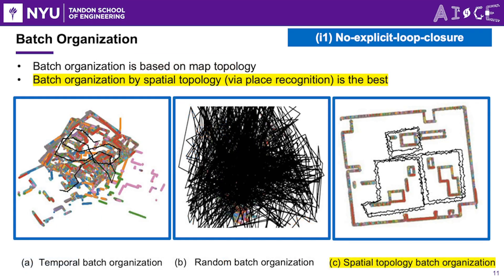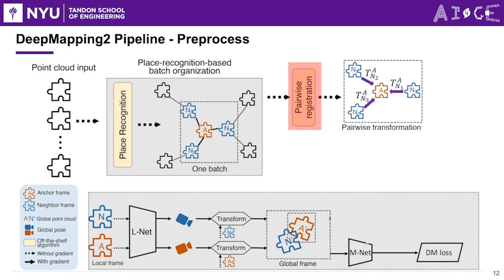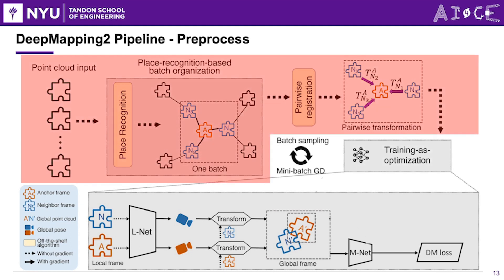Furthermore, the study compares different batch organization techniques, such as temporal organization and random organization. The findings demonstrate that batch organization based on spatial topology yields superior results compared to other methods. For each batch, the transformation between each frame and its neighboring frame is computed using the Iterative Closest Point algorithm (ICP), enabling accurate alignment of frames within the batch. After computing all of these, the preprocessing stage is complete.